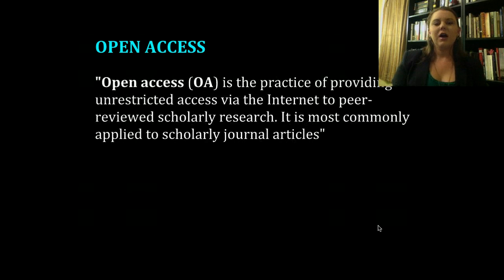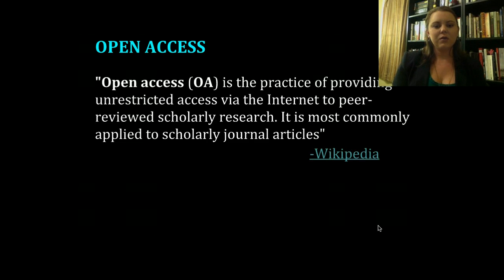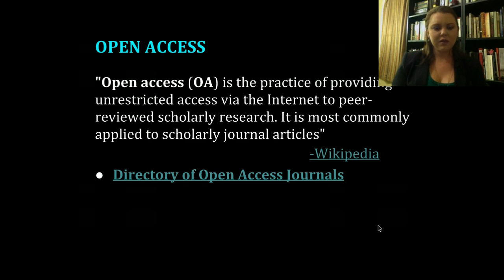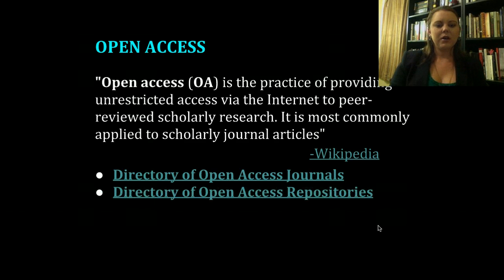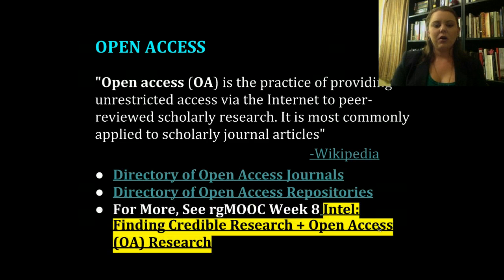How do we get scholarly articles online? We want to go to open access places. Open access, as defined by Wikipedia, is the practice of providing unrestricted access via the internet to peer-reviewed scholarly research — most commonly applied to scholarly journal articles. Most open access is free; you just have to know where to look. Some of my favorite open access websites are the Directory of Open Access Journals and the Directory of Open Access Repositories. On RG MOOC, in week eight, we have a whole list of different open access resources.